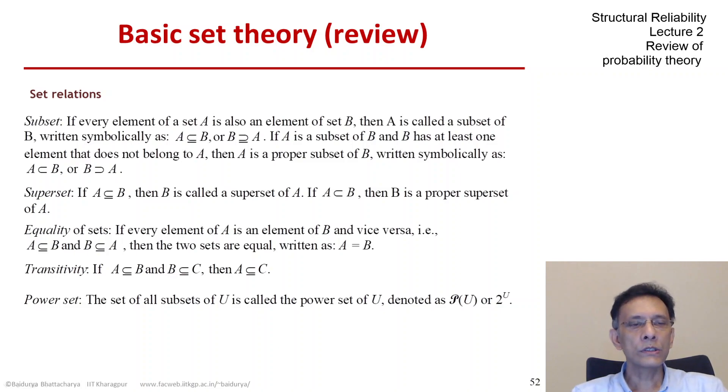In some situations, all elements of A could also belong to B. Then we call A a subset of B. If A is a subset of B and B is a subset of A, then A and B are equal. Let's solve a simple example on the next slide.